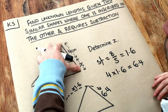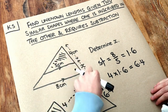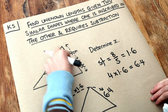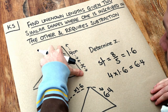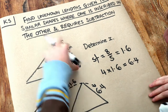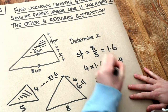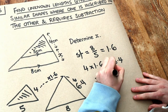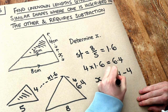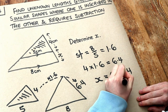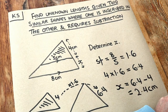If this whole length here is 6.4 centimetres, then we can easily find x by subtracting that 4 from the total length of 6.4. So x is 6.4 minus 4, which gives you 2.4 centimetres. And that is the final answer.